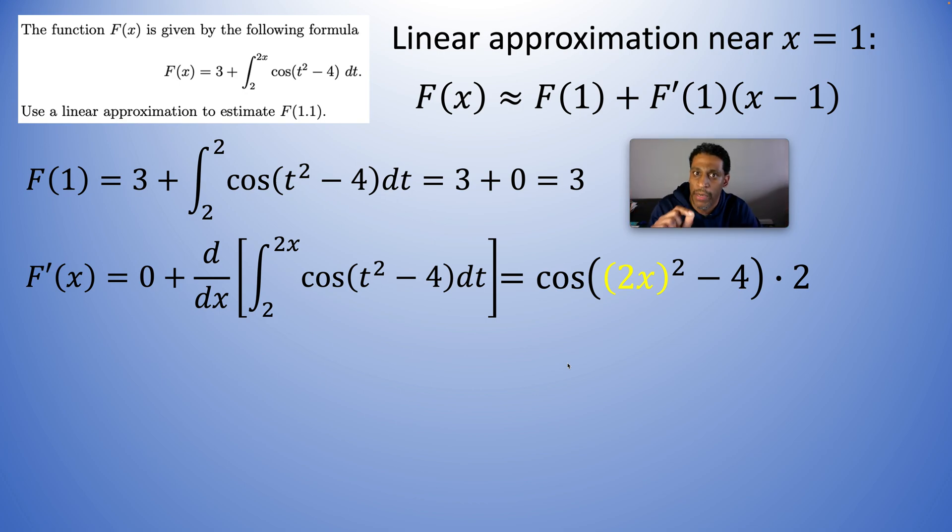But don't forget though, we have to multiply by 2x's derivative, 2. That's it. That's your derivative. Why did I forget about the 3 part? Because the derivative of a constant is 0.